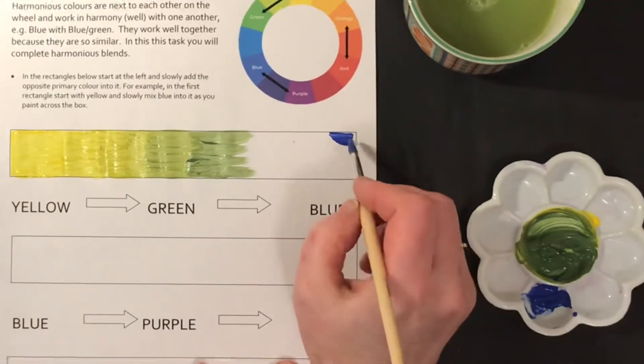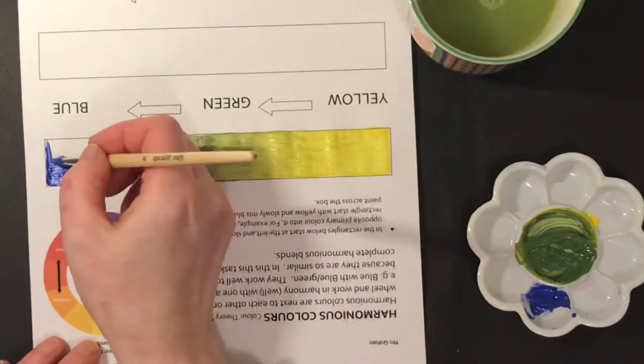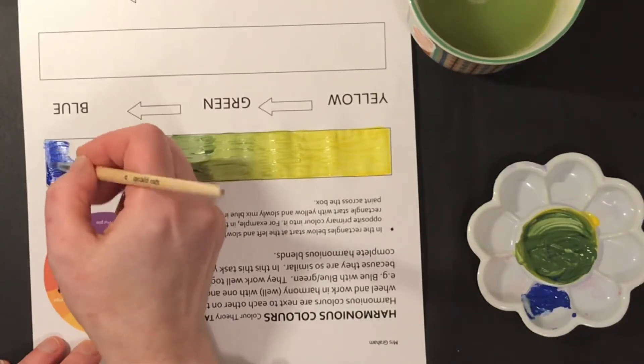Now you can see I'm actually starting at the other end with my plain blue. It's quite hard to do it this way, so I've turned it upside down so I'm working with my hand because I'm right-handed.